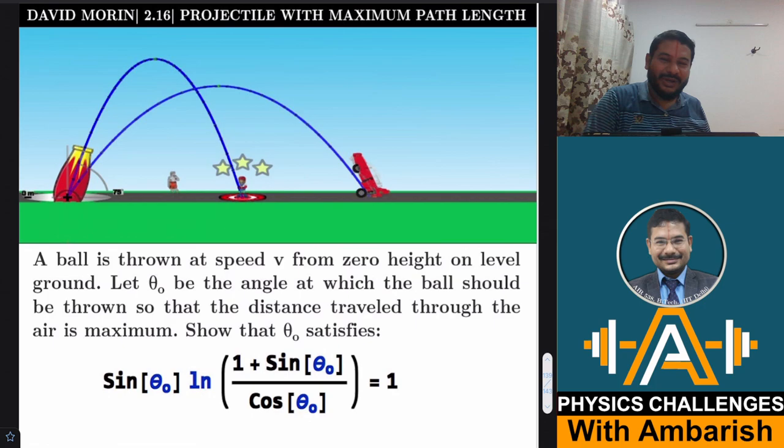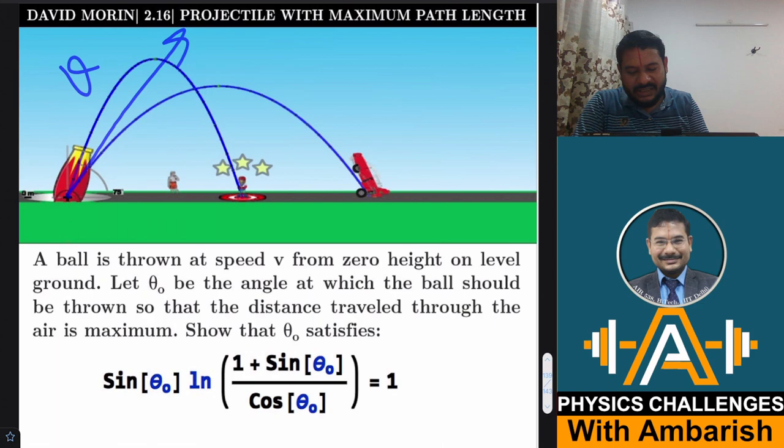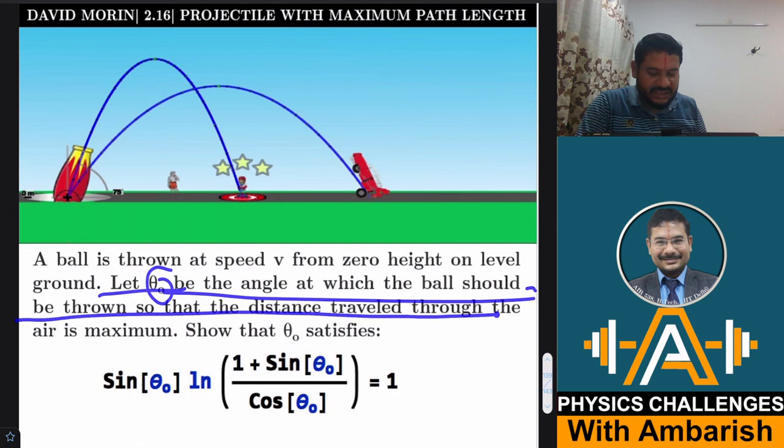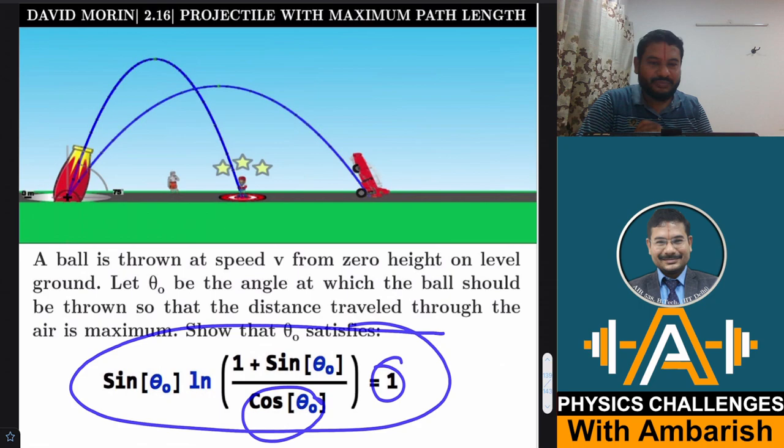This is David Morin problem 2.16, that is projectile with maximum path length. So we have to optimize a projectile for achieving the maximum length of the trajectory. So let me formally read out the question. A ball is thrown at speed v from zero height on level ground. So we throw a ball with some speed v at some angle theta. Let theta naught be the angle at which the ball should be thrown so that distance traveled through the air is maximum. Show that theta naught satisfies sine theta naught into log of 1 plus sine theta naught upon cos theta naught is equal to 1. So this is what we have to prove.